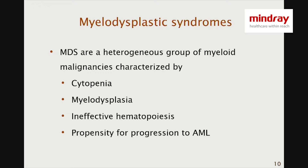There are dysplasias in the morphology, both in peripheral blood and marrow. There is ineffective erythropoiesis, meaning the marrow is invariably cellular or even hypercellular, and almost half of the patients have the propensity to go on to develop acute myeloblastic leukemia.